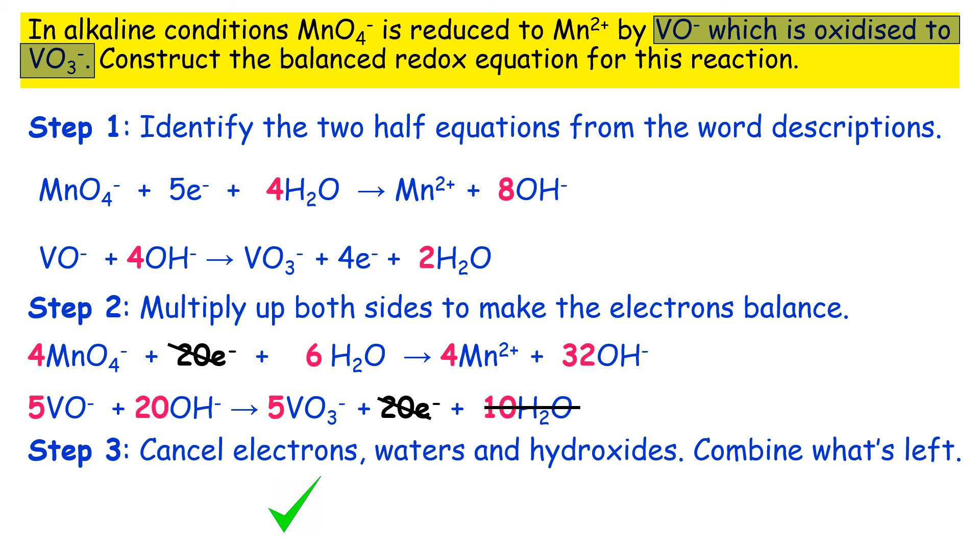Looking at the hydroxides you've got 32 OH-s in the reduction and 20 OH-s in the oxidation. So removing the 20 and that leaves you 12 OH-s in your reduction.